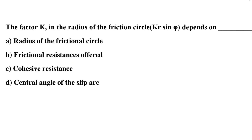Next question: the factor K in the radius of friction circle, K or sine phi, depends on — Option A: radius of friction circle, Option B: frictional resistance offered, Option C: quasi resistance, Option D: central angle of slip arc. The correct answer is Option D, central angle of slip arc.